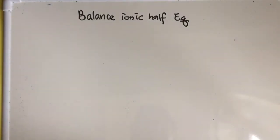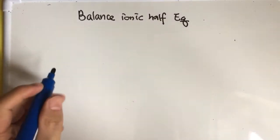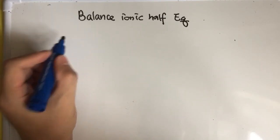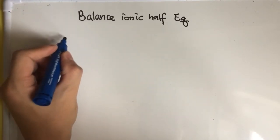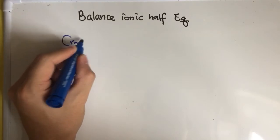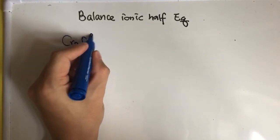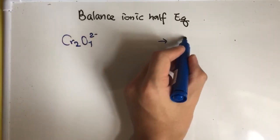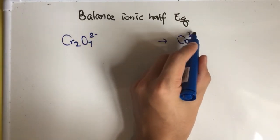In this video I'm going to show you how to balance ionic half equations. I will use an example of dichromate. First, write down the reactant. For dichromate, the ionic formula is Cr2O7 2-. Then write down the product, which will be Cr 3+.